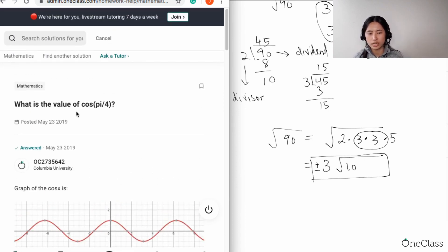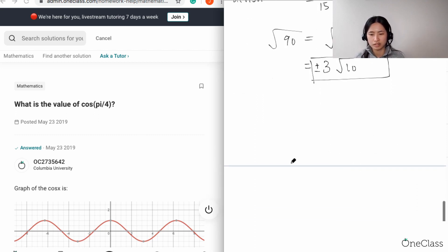Right, so first of all what is cosine pi over four? Remember what I said: pi would be equal to 180 degrees. So if you have pi which is equal to 180 degrees, you're going to take 180 divided by 4 to identify what that angle is. So 180 divided by 4 should give you 45 degrees. So essentially this question is asking you what is cosine of 45 degrees.